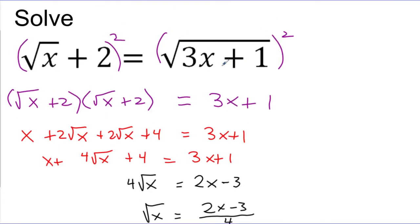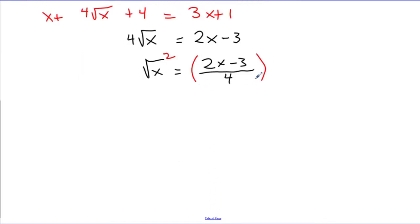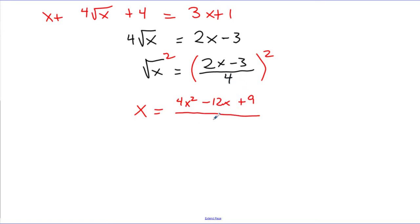Now I can square away this square root, which means I get this fraction expression to square. The left-hand side: squaring and square root cancel, leaving just x. On the right, squaring 2x minus 3 over 4 — I'll let you square 2x minus 3, which becomes 4x squared minus 12x plus 9. Don't forget to square the denominator, which gives 16. So the right-hand side is 4x squared minus 12x plus 9, all over 16.